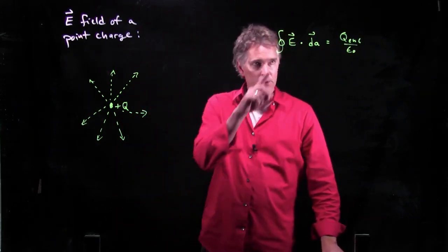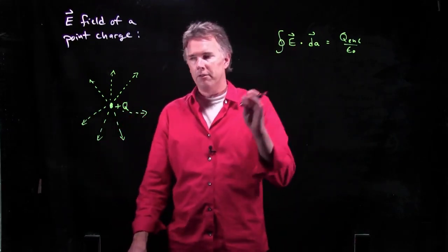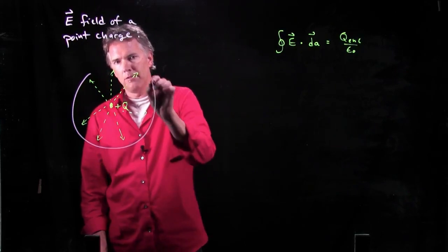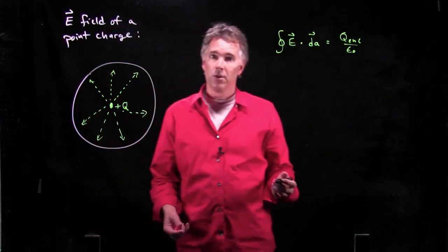Once you write down Gauss's law, you need to draw a surface. So let's draw a surface around this thing. And since we have spherical symmetry, let's draw a sphere.